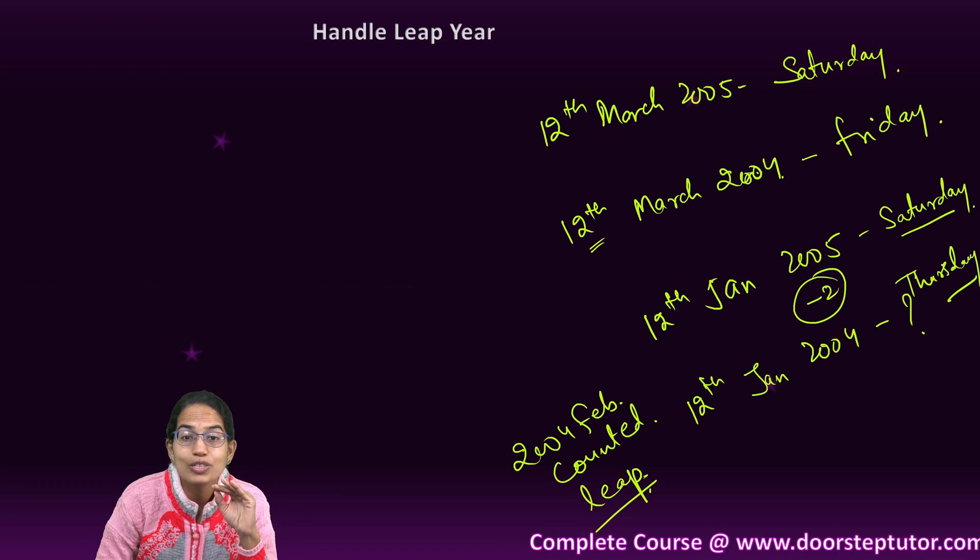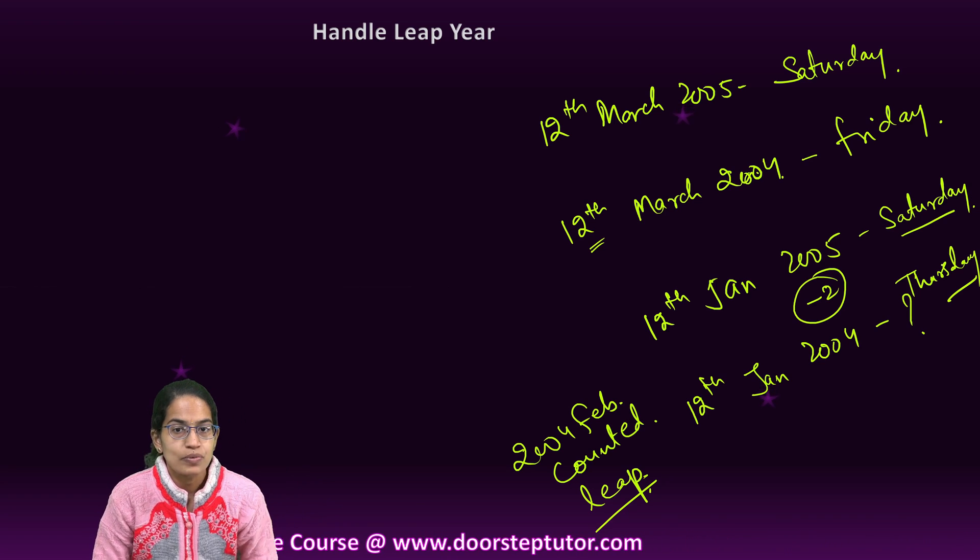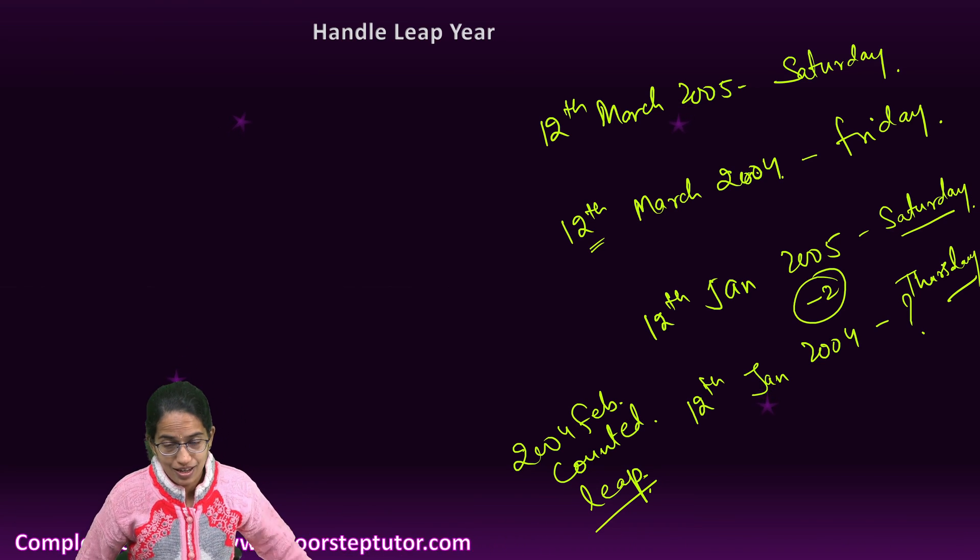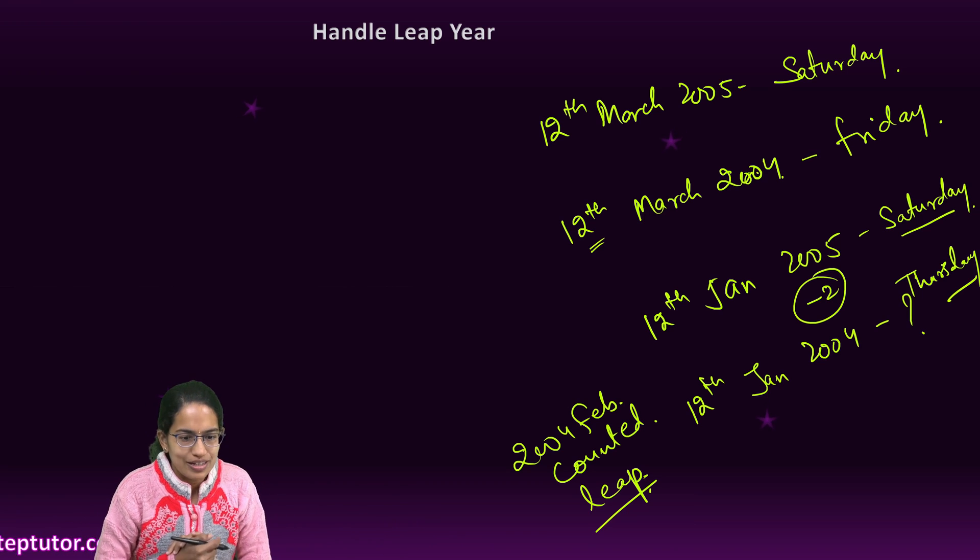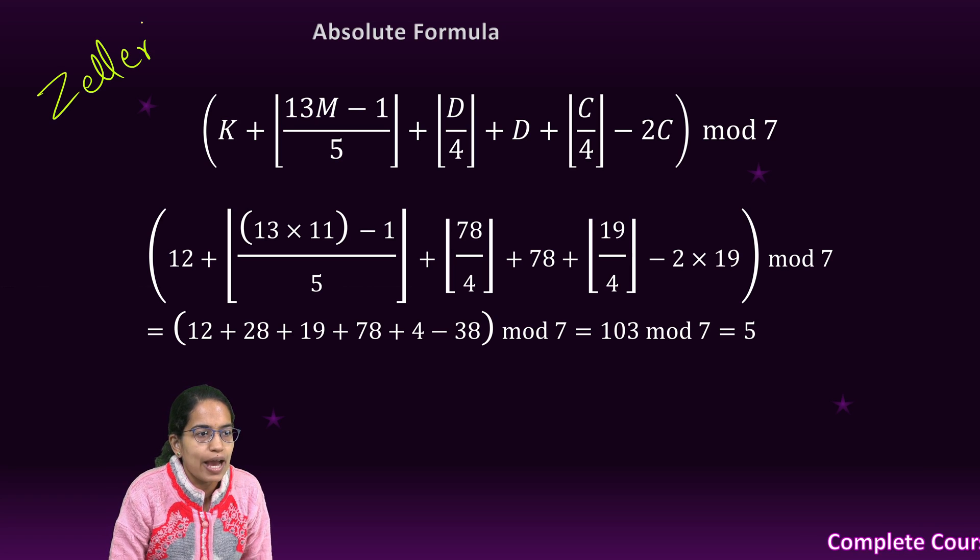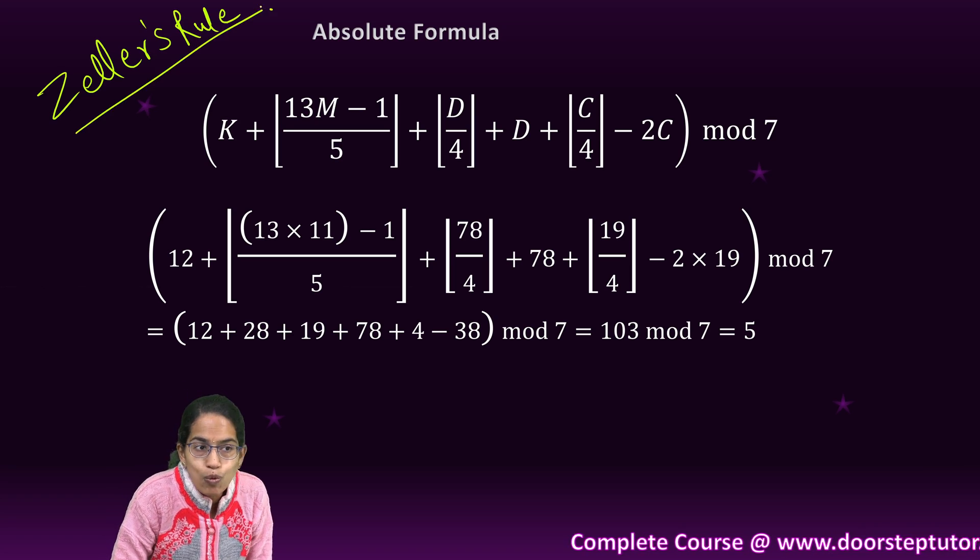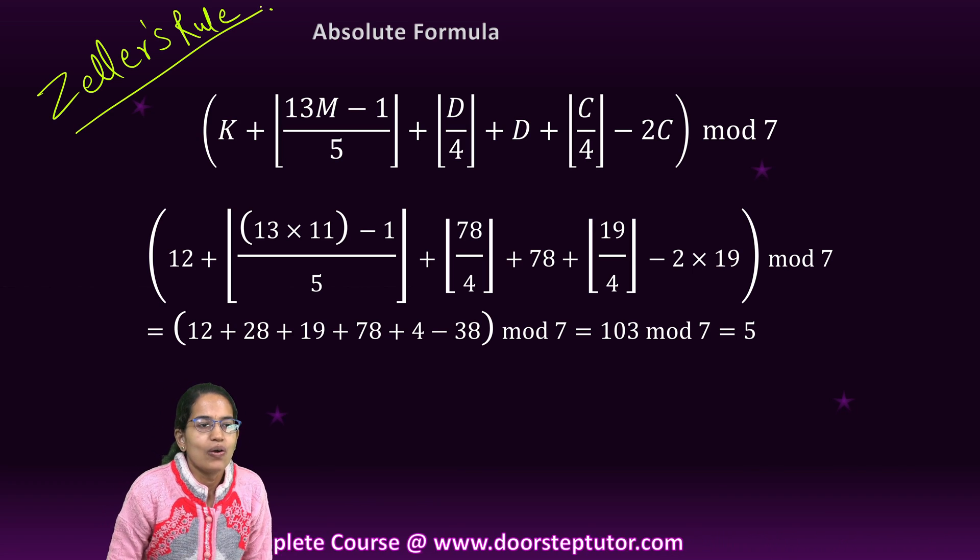Now coming to the most exciting part of it, what we introduced in the very beginning: if I don't know anything and I'm given any day of any year, how would I calculate? This is what is known as Zeller's rule, given by Captain Zeller, and it is applicable only to the Gregorian calendar.